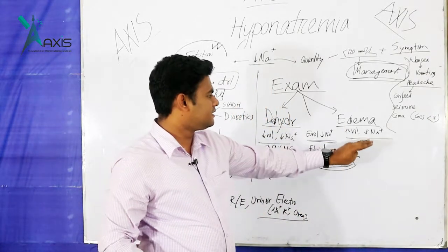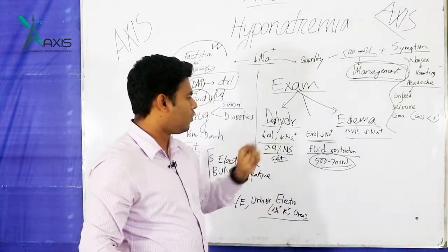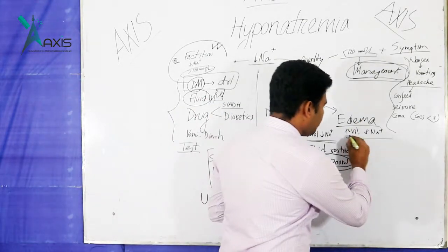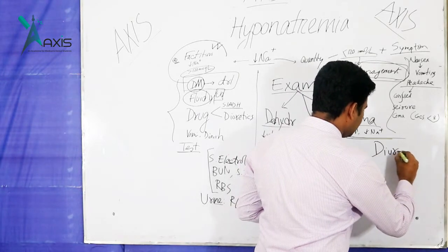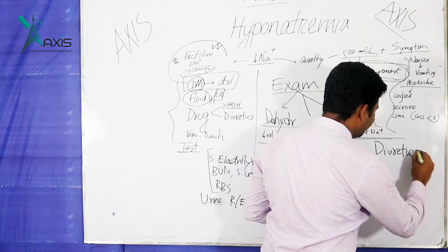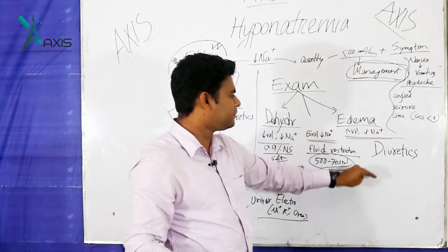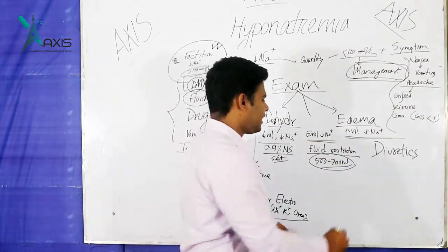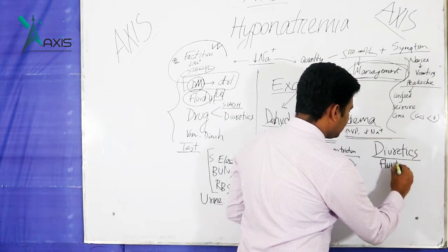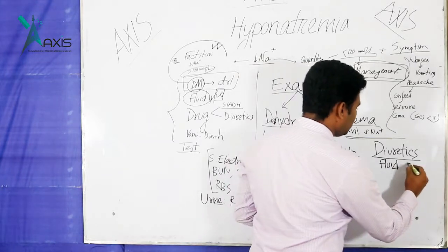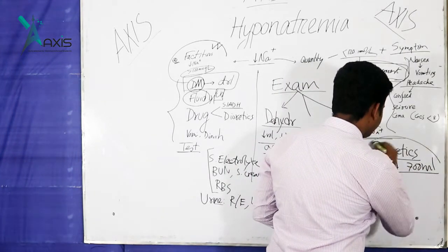If the patient has hypervolemic hyponatremia, we cannot give fluid — we must give diuretics. Diuretics remove excess fluid from the body. So the main treatment for hypervolemic hyponatremia is diuretics. Along with diuretics, we also do fluid restriction — the patient should not drink more than approximately 700 ml of fluid per day.